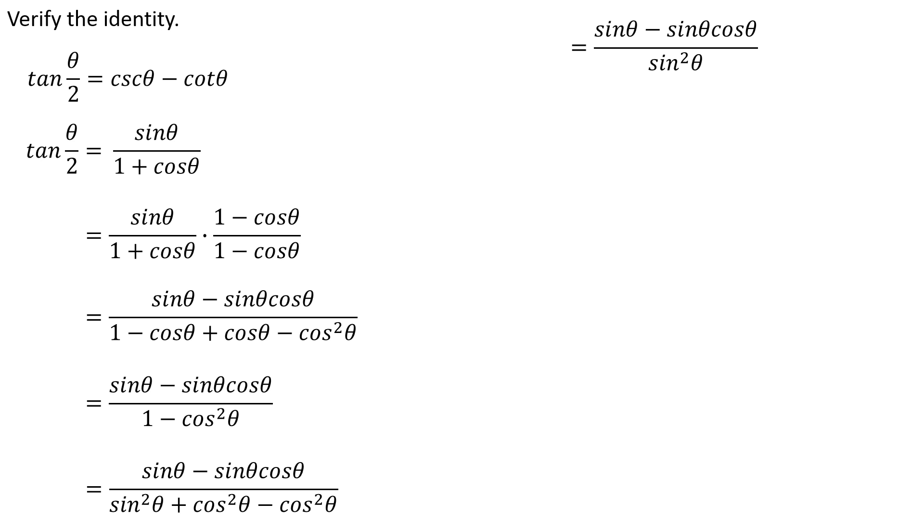So this is really nice. I've got a real concise denominator. So I can break this into two different fractions because of the subtraction in the numerator. I've got sine of θ over sine squared θ. Subtract sine θ cosine θ over sine squared θ.